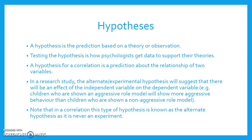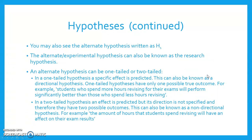A hypothesis for a correlation is a prediction about the relationship of two variables. In a research study, the alternate/experimental hypothesis will suggest that there will be an effect of the independent variable on the dependent variable. For example, children who are shown an aggressive role model will show more aggressive behaviour than children who are shown a non-aggressive role model — that's from the Bandura study on transmission of aggression. Note that in a correlation, this type of hypothesis is known as the alternate hypothesis, as it is never an experiment. You may also see the alternate hypothesis written as H1. The alternate/experimental hypothesis can also be known as the research hypothesis.